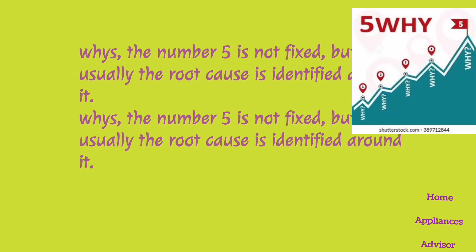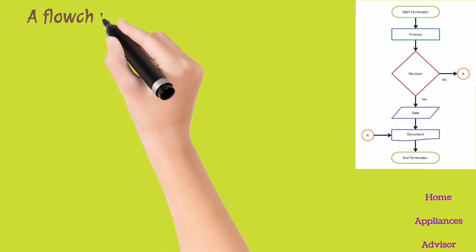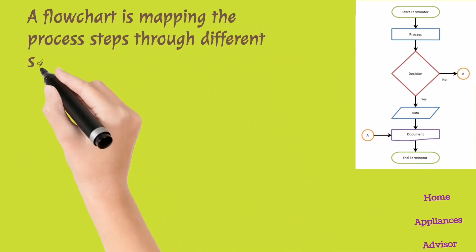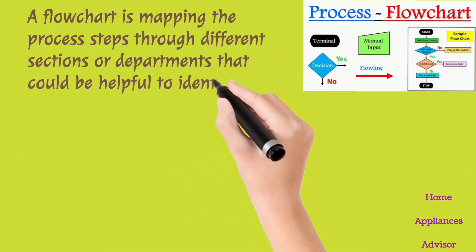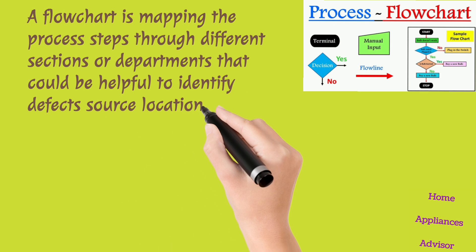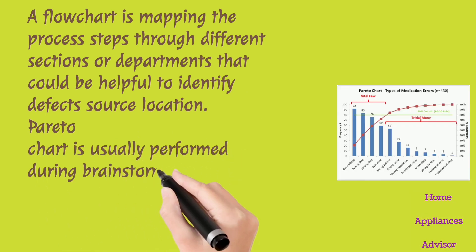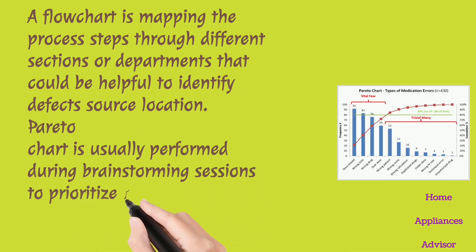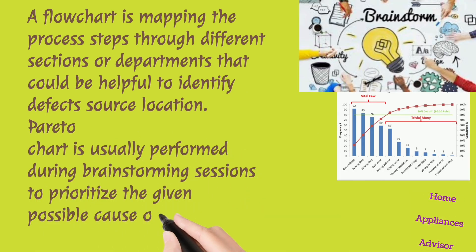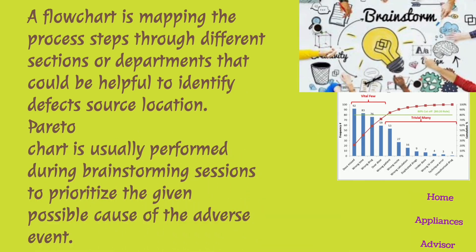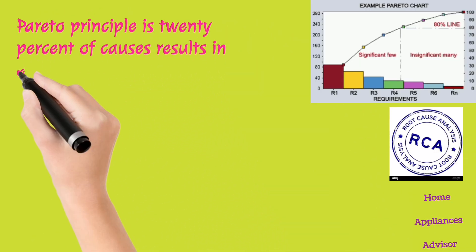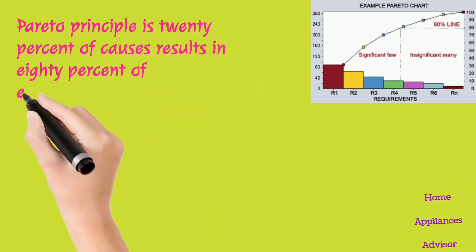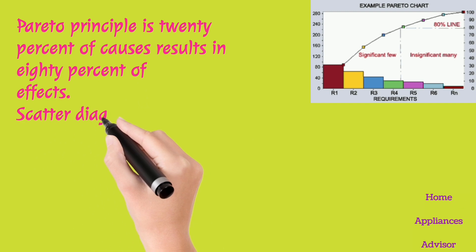A flowchart maps the process steps through different sections or departments, which can be helpful to identify the effect source location. The Pareto chart is usually performed during brainstorming sessions to prioritize the given possible causes of the adverse event. The Pareto principle states that 20% of causes result in 80% of effects.